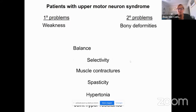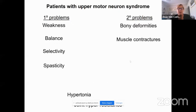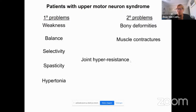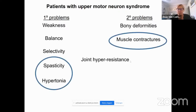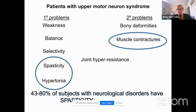One of the things we actually assess when we examine children, for example when assessing ankle range of motion, is joint hyper-resistance. It is hard to fit into primary or secondary problem categories because it combines both muscle contractures and spasticity or hypertonia. We know that children with neurological disorders, especially cerebral palsy, have spasticity — over 80% in many studies. We call this hyper-resistance because it is a combination of both primary and secondary problems.